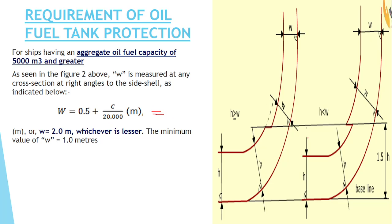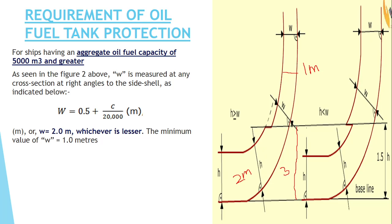One more thing to understand from the diagram: after a distance of 1.5H, you have to follow certain norms. If your distance is less than 0.15H, you have to follow the projection of H. But if your distance goes beyond 1.5H, you have to follow the projection of W. For example, if the width W is 1 metre and the height H is 2 metres, then 1.5H equals about 3 metres. So up to 3 metres of height, you follow the H projection of 2 metres, but after 3 metres you follow the W projection of 1 metre.